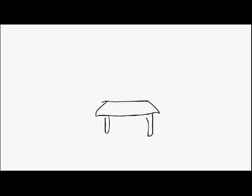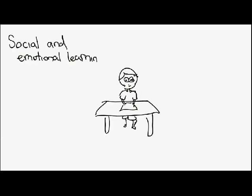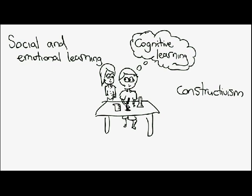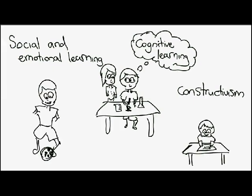By implementing into the classroom social and emotional learning, cognitive learning and constructivist learning, a very resultant learning environment is created. Then, on top of that, Gardner's theory of multiple intelligences is used, all students will be reached and a great learning environment is created.